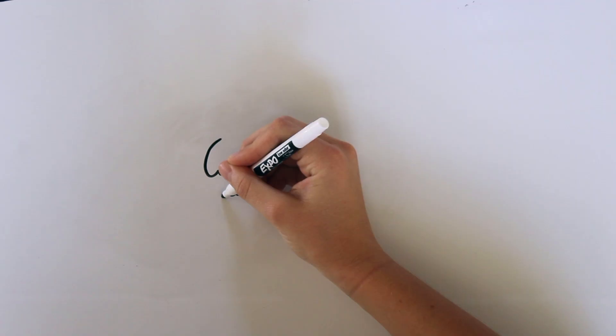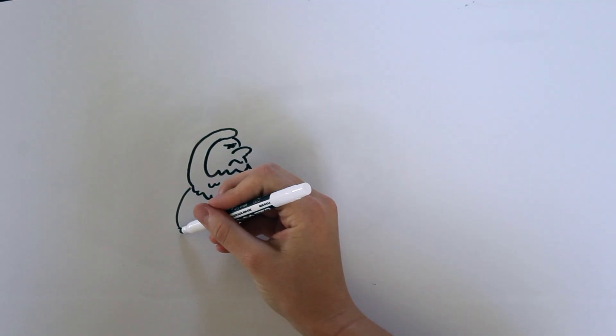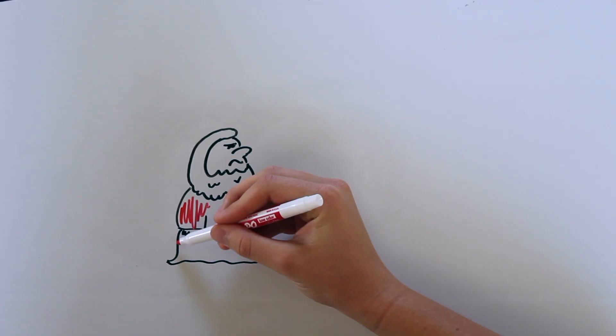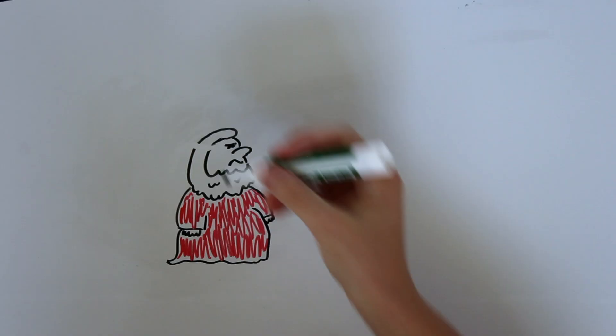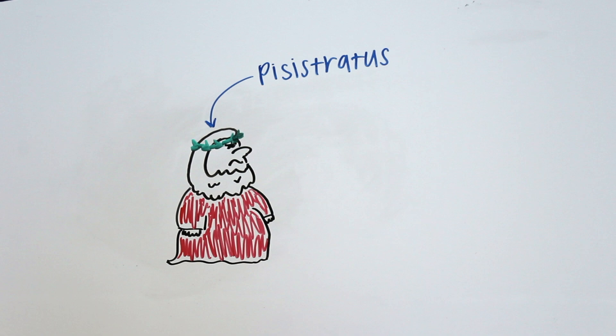Thousands of years ago, in the 500s BC, lived a tyrant of Athens who would one day be crucial to the origins of Greek tragedy. His name was Pisistratus.